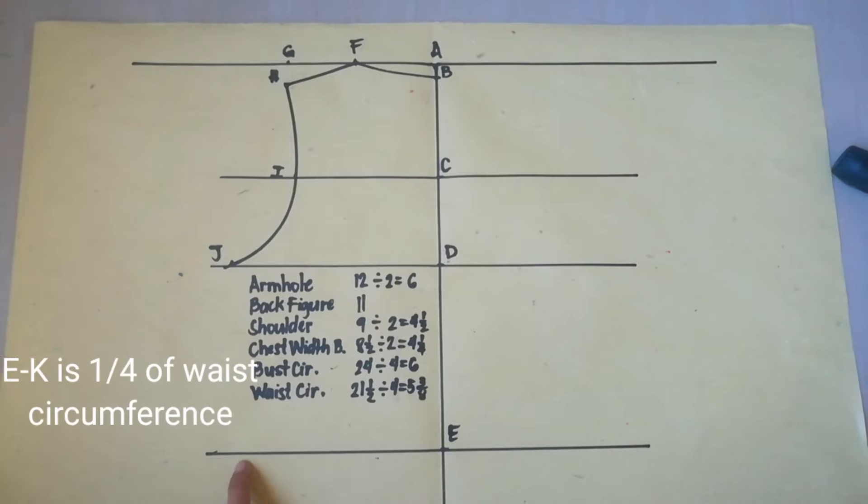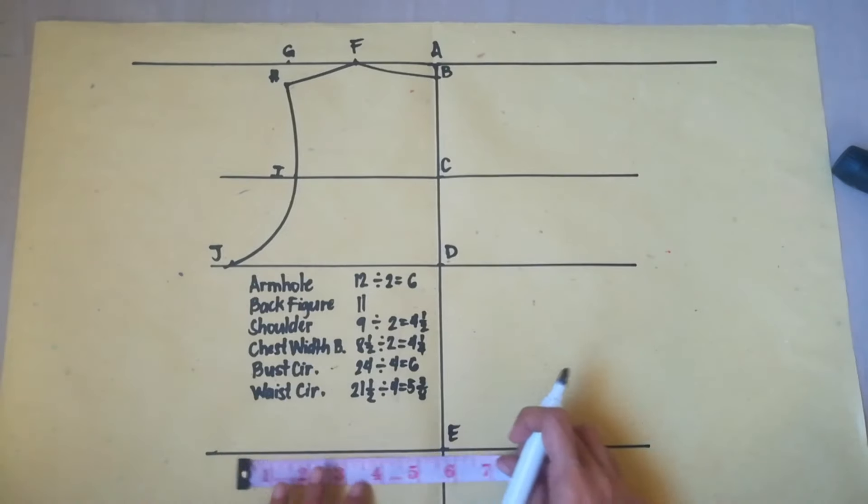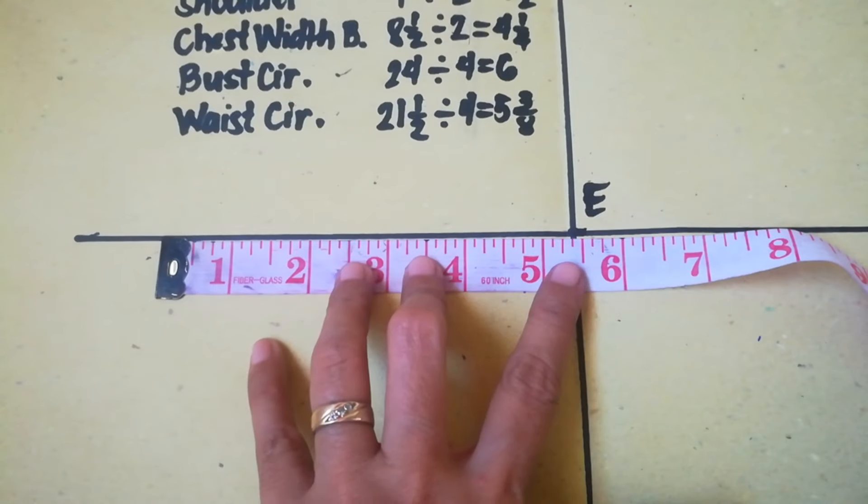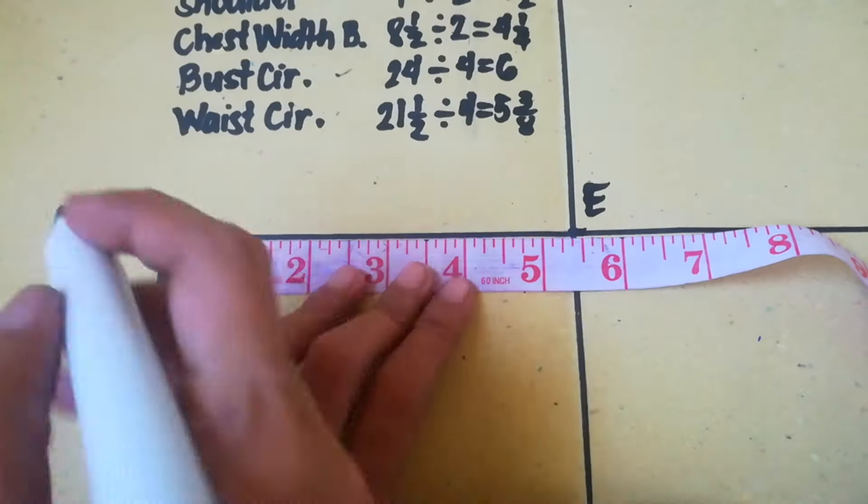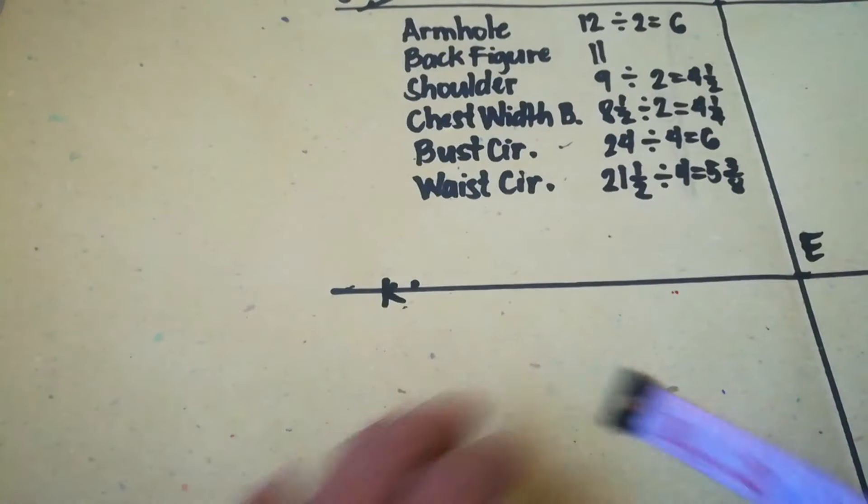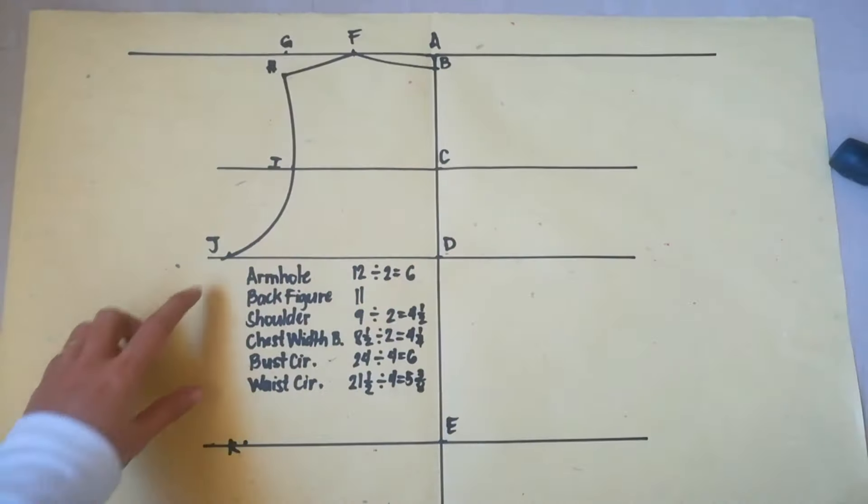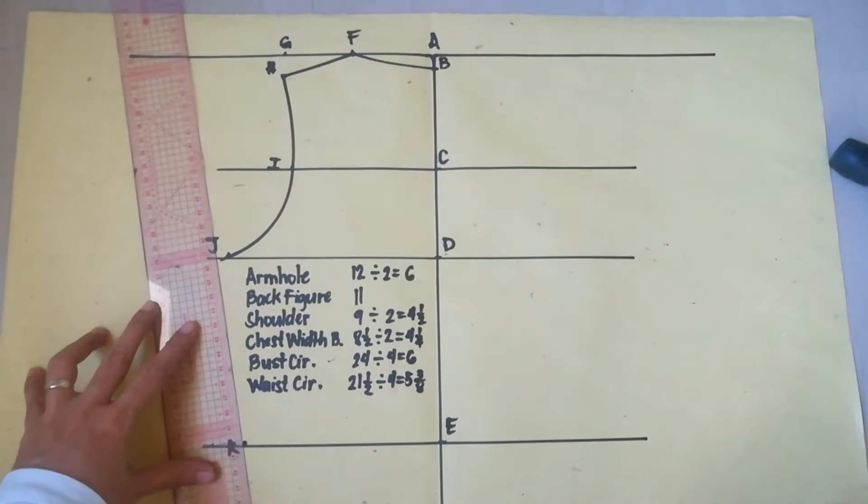Now, E to K is waist circumference divided by 4. So, 21 and 1 half divided by 4 is 5 and 3 eighths. So, this is 5 and 3 eighths, point K. Now, connect J and K with ruler.